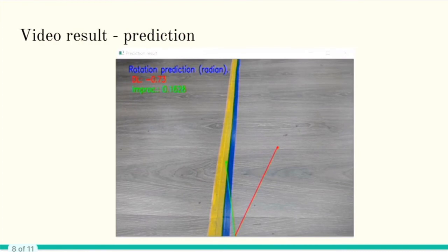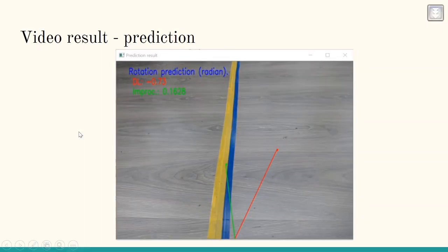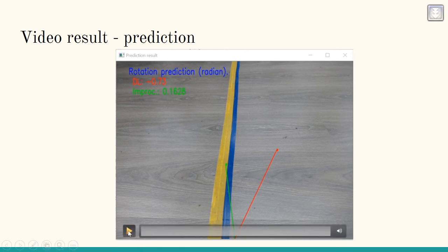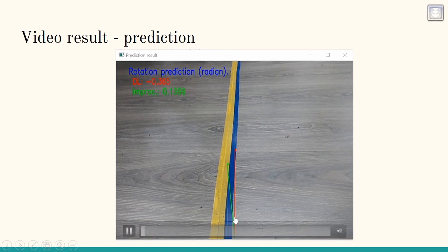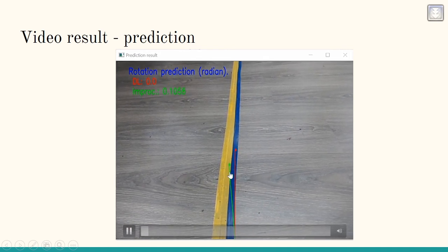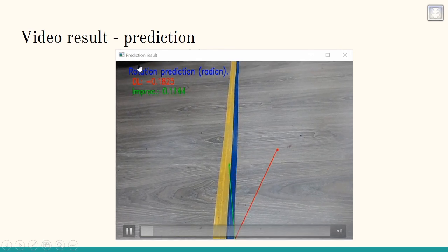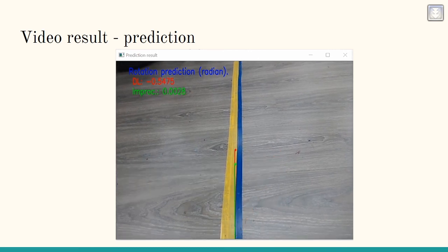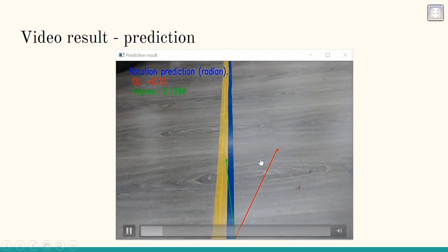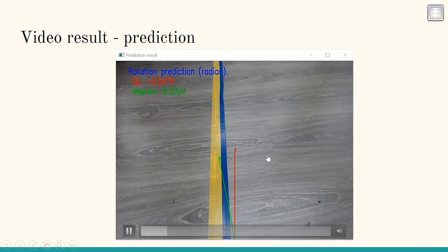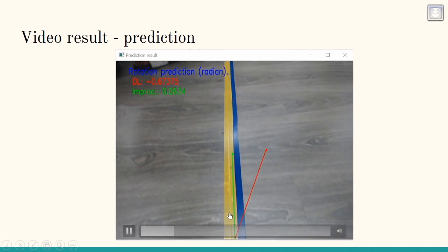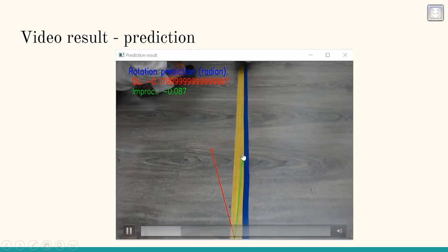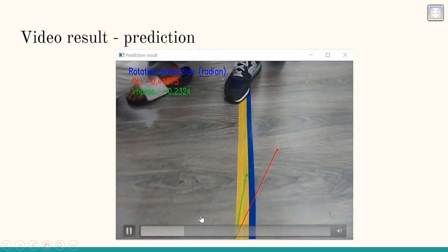Now let's look at the results, comparing the segmentation image-processing approach with the deep learning approach. The green line shows predictions from the image-processing segmentation approach, and the red line shows predictions from deep learning. Because we had only a limited dataset and limited time, the deep learning model cannot predict very well — the deviation is too high.